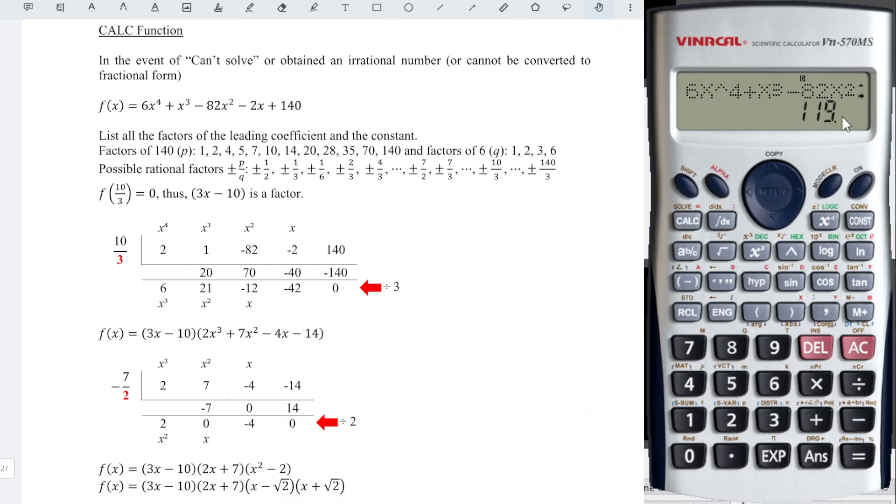According to the factor theorem, if the value that we obtain is not zero, which means that 2x - 1 is not a factor or x = 1/2 is not a zero.